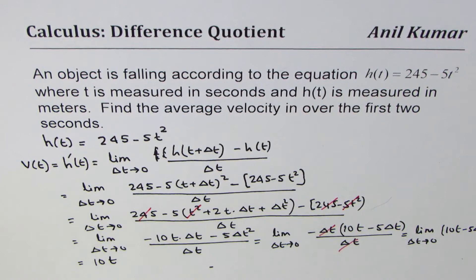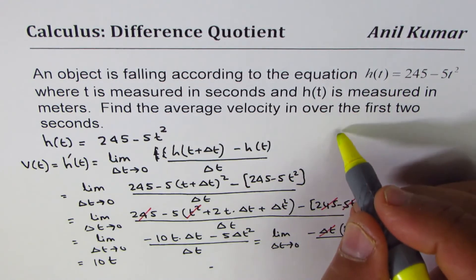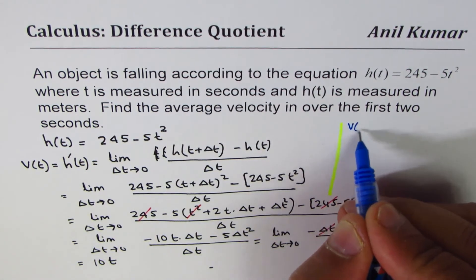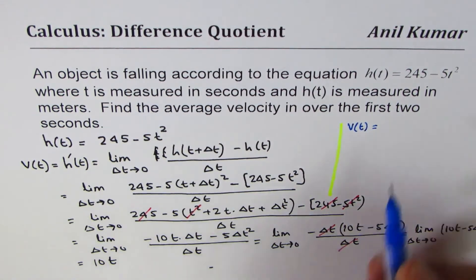So the expression for velocity is equals to 10t. So let me use this space now to rewrite what we have got for velocity. So we have got expression for velocity as equals to 10t.